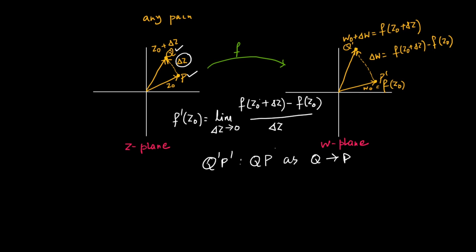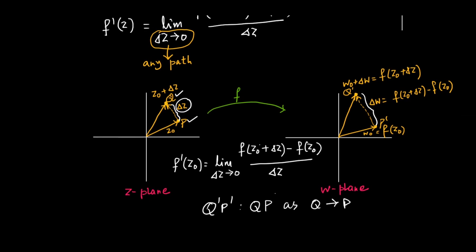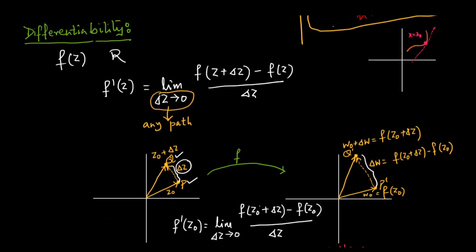So the derivative at z = z₀ is actually a ratio of the displacement in the w-plane to the displacement in the z-plane, as the two points p and q come close to each other in the domain. This is the geometric interpretation of the derivative of a function of a complex variable, which is unlike the derivative of a function of a real variable — where the interpretation is the slope of the tangent line.